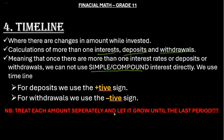Treat each amount separately and let it grow until the last period. So this means you need to calculate the first amount, then you get done, then you go to the next. Once you are done you can proceed to the other until you are done. Now let's put all this into action.